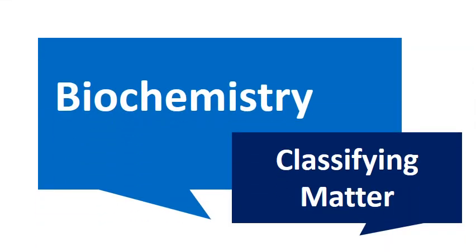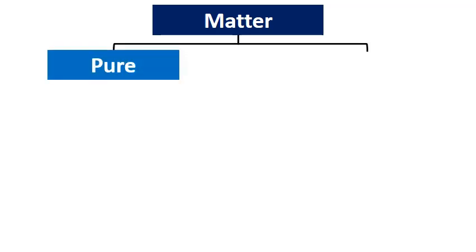We're humans and we like to classify things, and therefore we classify matter. All matter is classified into two major groups: our pure substances and our impure substances or mixtures.